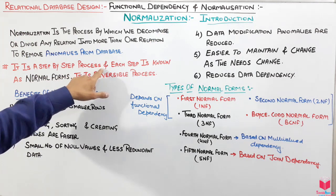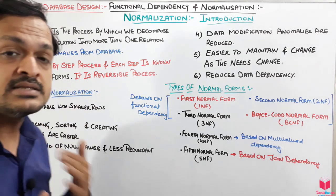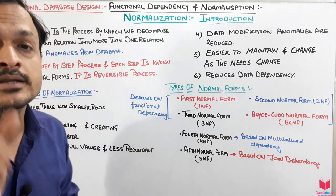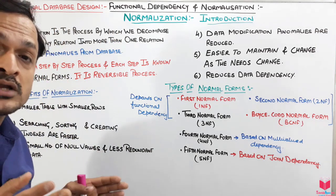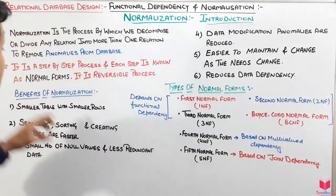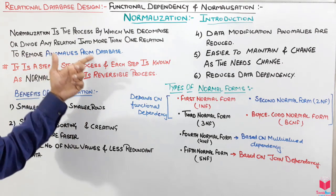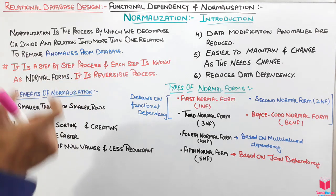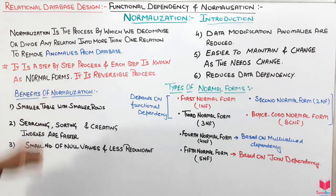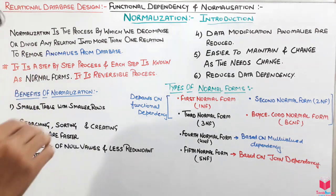It is a step-by-step process of dividing our table. We cannot divide every table at once; we have to take it step by step to remove anomalies. Each step in the normalization process is known as a normal form.